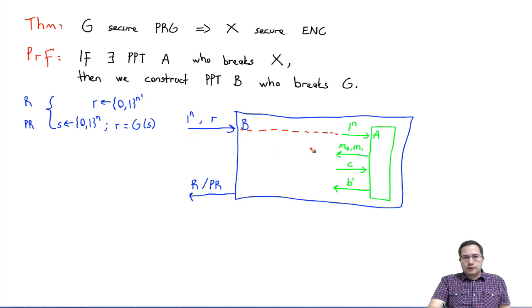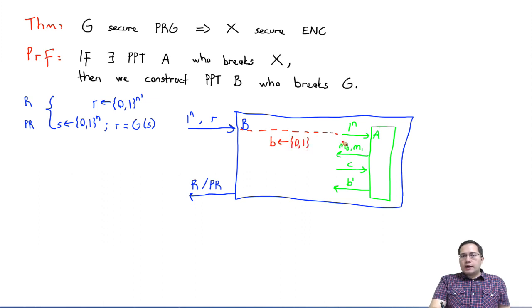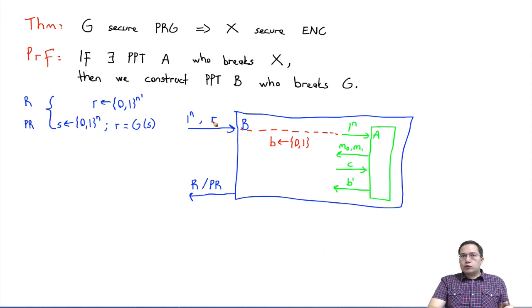So now our job is to fill in the code for B. For the security parameter, we will just pass on the same value — the green security parameter will be the same as the blue one. For the encryption part, what B will do is: pick a bit B, then encrypt M_B. But it needs to tie it to this random or pseudorandom value somehow, so it will compute C as R XOR M_B, and then send that C.